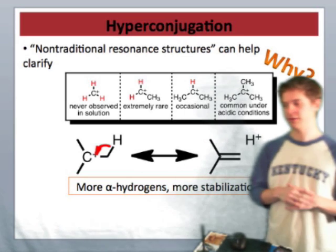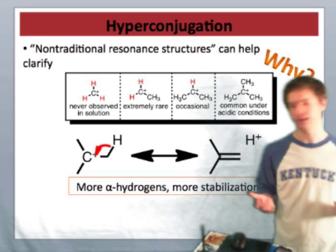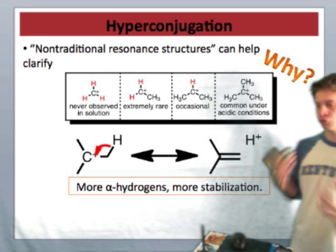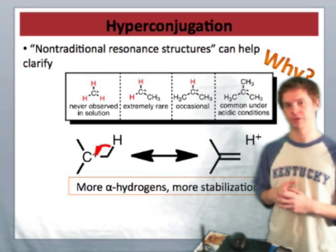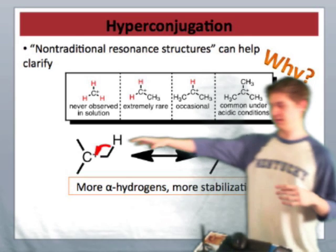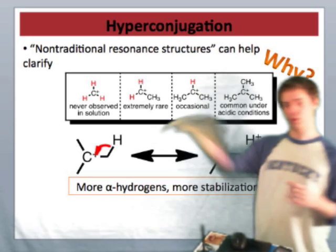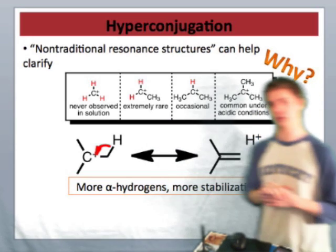Hyperconjugation is the first in a series of what I call non-traditional resonance structures that we'll see. So we can draw a non-traditional resonance structure, or what's sometimes called double-bond, no-bond resonance, by imagining this sigma bond breaking and donating into a new pi-bond, and the curved arrow there shows you this process.